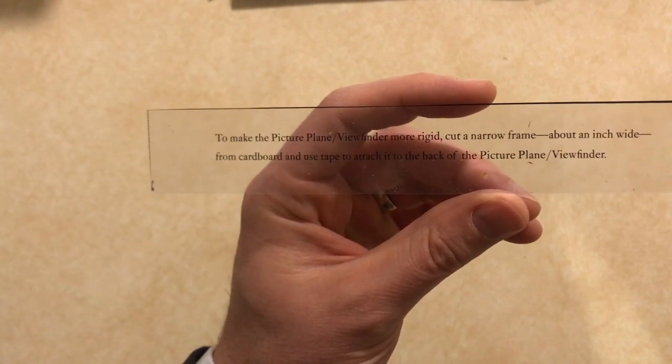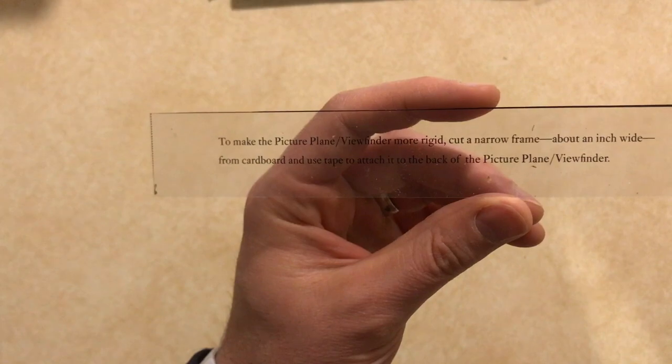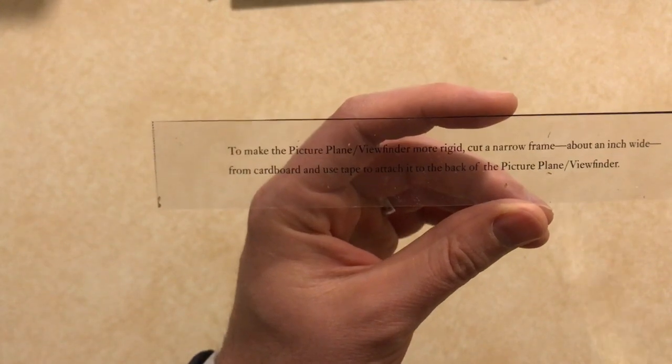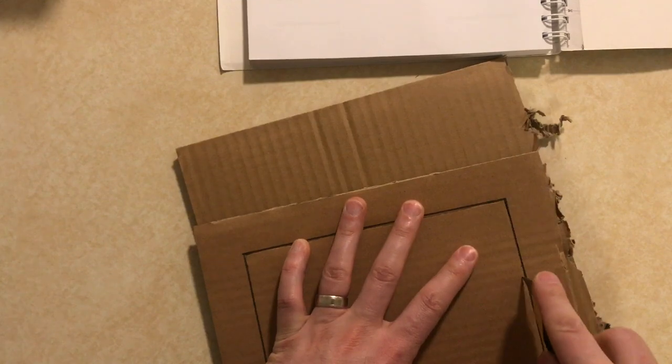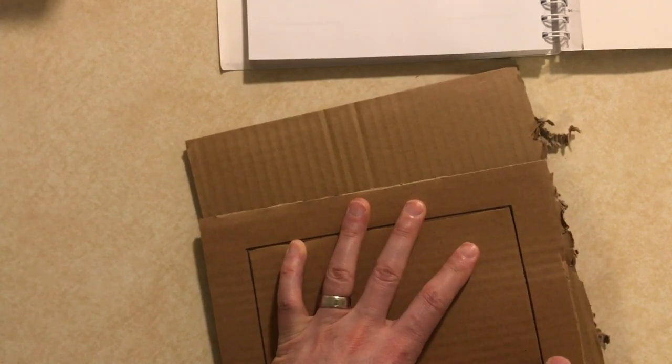Once you cut it out, it's got a few instructions on the bottom about how to stabilize it. You can use a piece of cardboard for this, and you basically just draw out the dimensions of the picture plane and you can cut that with an exacto knife.